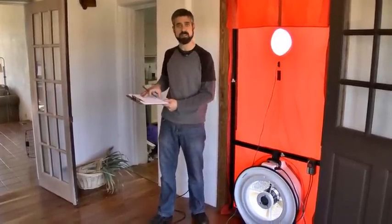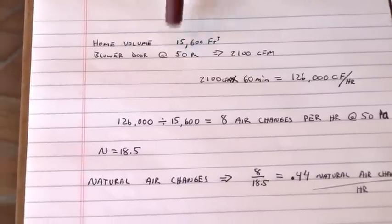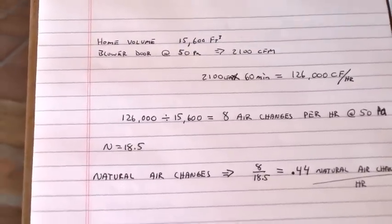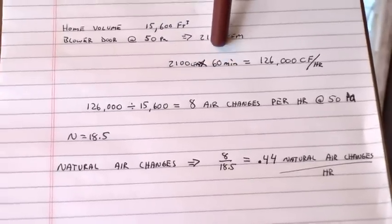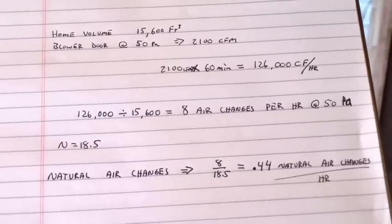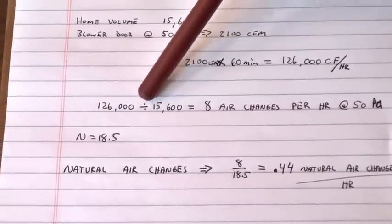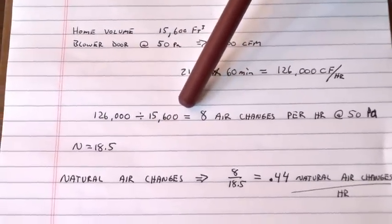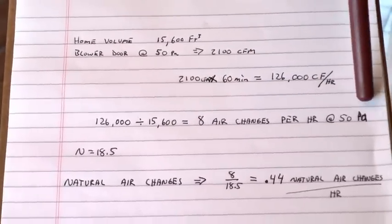Let's take a look at the numbers and see what we've got. Based on the measurements we took, we came out with a home volume of 15,600 cubic feet. With our blower door reading at 50 pascals, I called that about 2,100 CFM. 2,100 cubic feet per minute times 60 minutes gives us 126,000 cubic feet each hour. We take that and divide by the volume of our house, 15,600, and we're getting eight air changes per hour at 50 pascals.